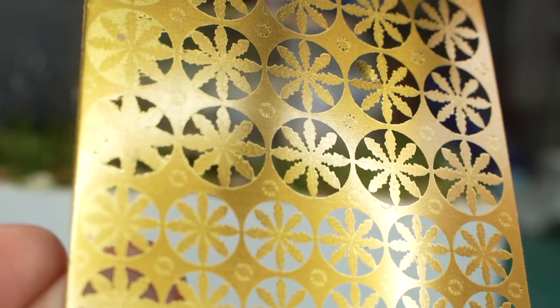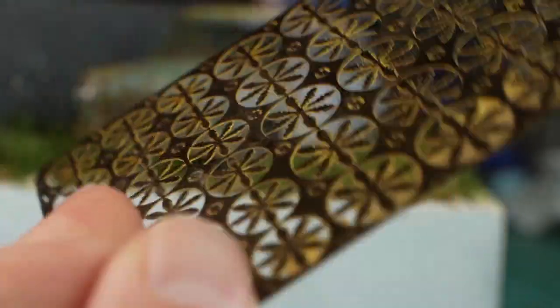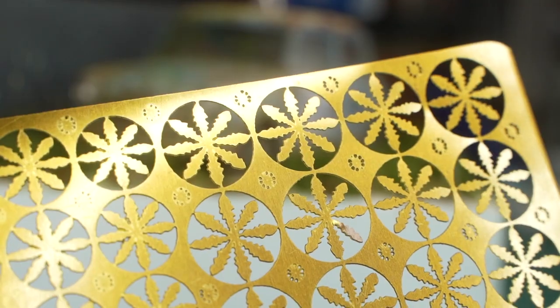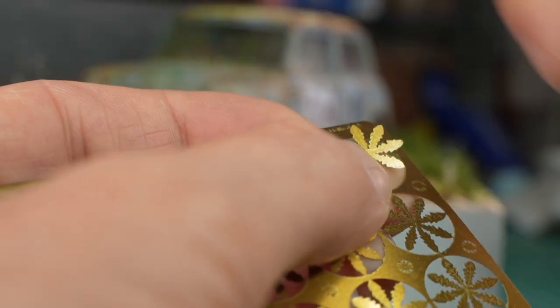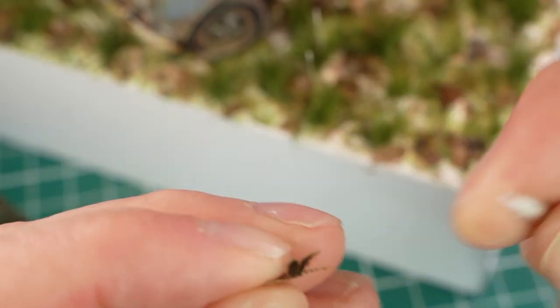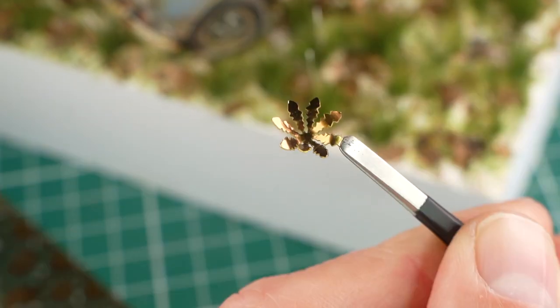Some years ago I designed and photo etched these dandelion leaves myself. Not all of them are perfect, but some of them are and I was ready to give them a try. Thin brass is easy to bend. It makes the leaves more natural. Look how shiny this one is.